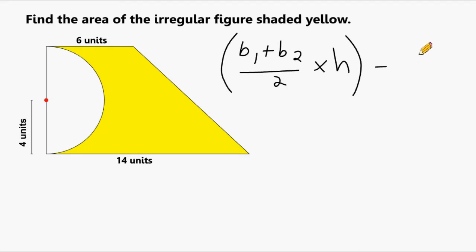Now we know the area of a complete circle is π times radius to the second power. But we only want to know what half of that area is, so we're going to take this result and divide by 2.